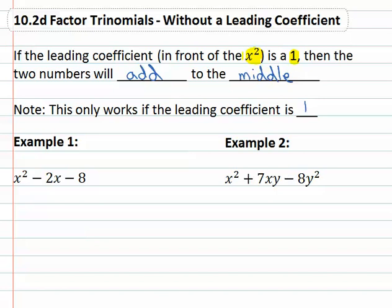But if we had something like x squared minus 2x minus 8 and we are looking for our factors, what we can do is ask ourselves, what's going to multiply to negative eight and add to negative two?